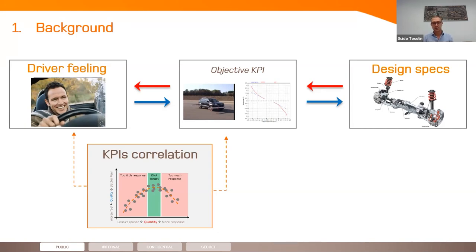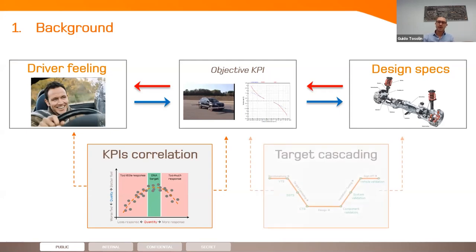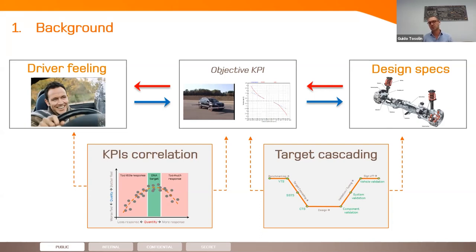In order to link the subjective feeling with the objective KPIs, we have a process called objective and subjective correlation. We have discussed this topic in a previous webinar, so I recommend you check it out on our social media. Today we will focus on the other part of this process, which is the so-called target cascading, where we try to link objective KPIs at full vehicle level to KPIs at a lower level — on the suspension side, up to component specifications.